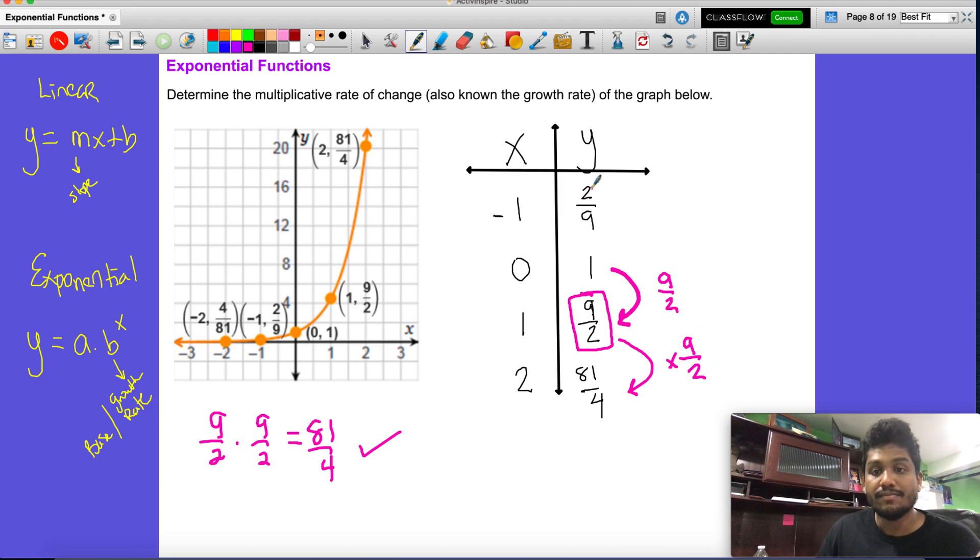I'm going to assume that if I take two over nine and I multiply it by nine over two - so I'm taking this and multiplying it by this - I should get one. So let's check that out. Two over nine times nine over two. Remember we just go straight across. 18 over 18, which is one. This tells us that nine over two is our multiplicative keyword multiplicative rate of change. So it's changing by multiplication, and that is by multiplying by nine over two.